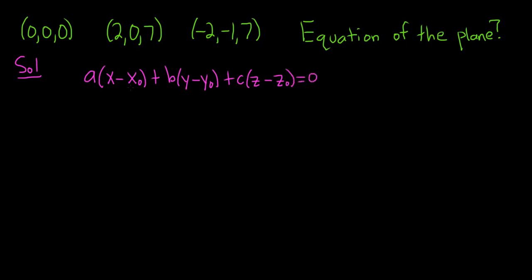The point (x₀, y₀, z₀) is a point on our plane, so we can use any of these three points — I'm thinking we'll use this one here because it's the easiest. The only thing we have to figure out is the ABC, and the vector ABC is called our normal vector.